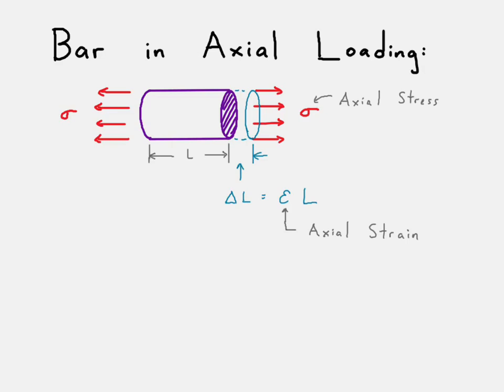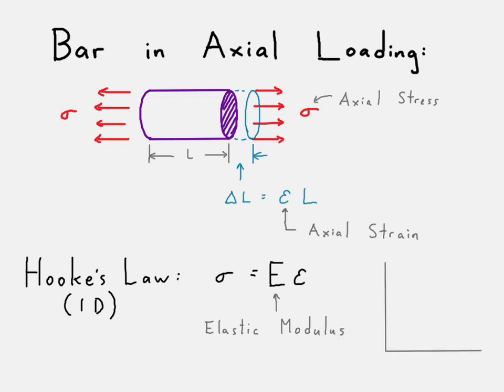Now, given that, we have Hooke's Law relationship in one dimension, which is that the stress is equal to the strain multiplied by the elastic modulus. So that elastic modulus represents the linear relationship between stress and strain. That's Hooke's Law.